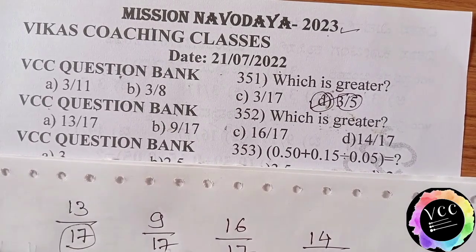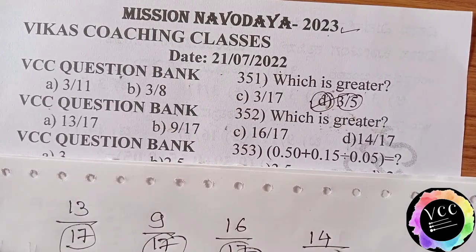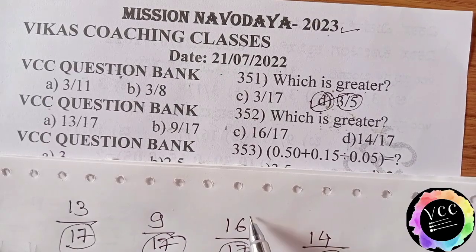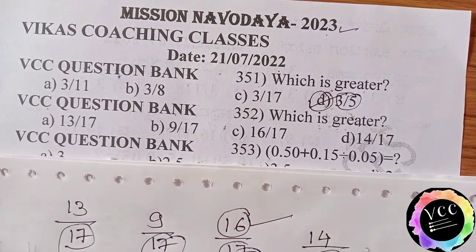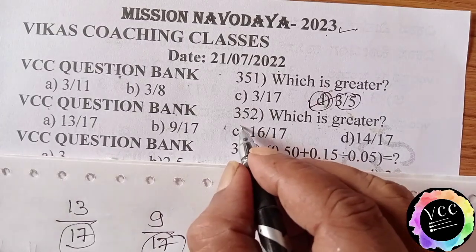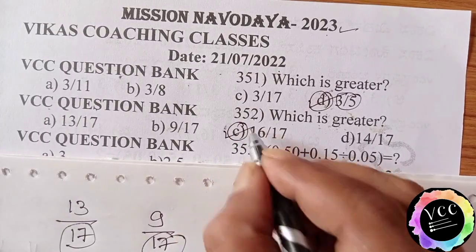When numerators are same, which numerator is greater, that is greater fraction. Means, C option is the greater fraction.